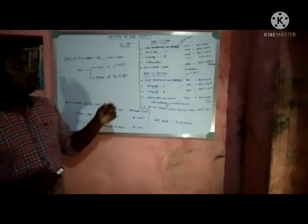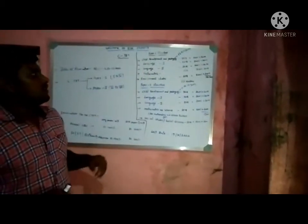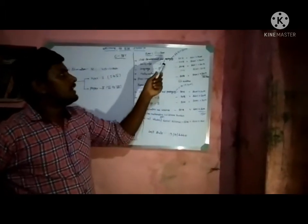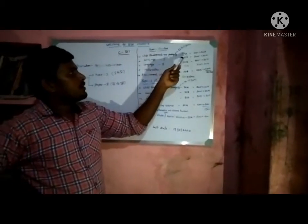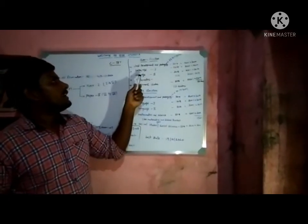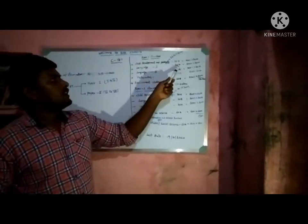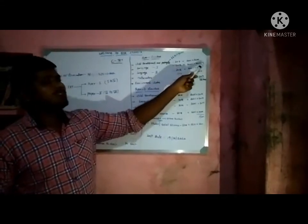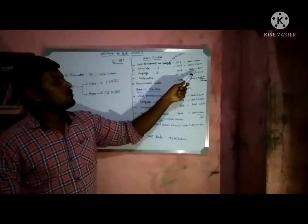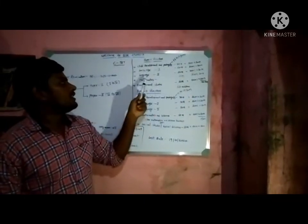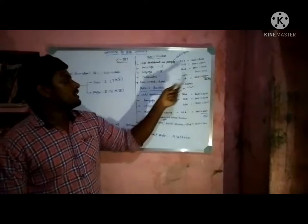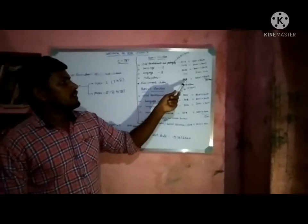The first thing is Child Development and Pedagogy. It is 1 mark per question. If there are any questions, they will be sent — each worth 3 marks. This subject is worth 3 marks, and this section will also be 3 marks.